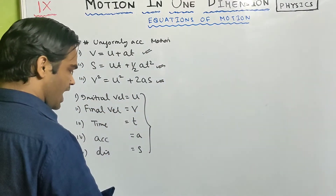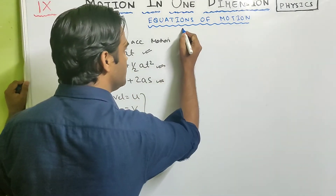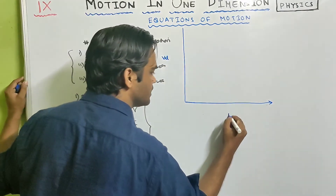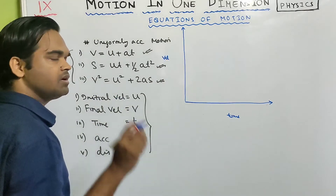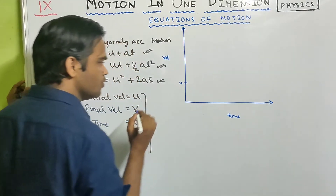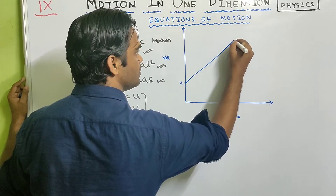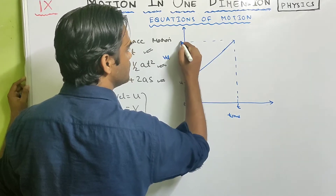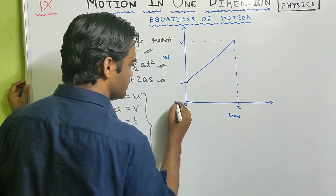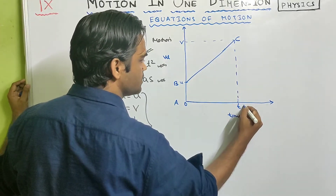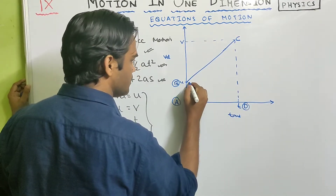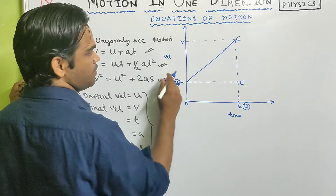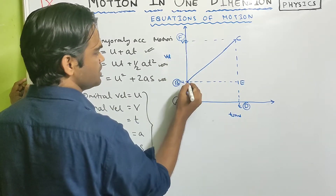Just look carefully. I will draw the velocity-time graph. The x-axis is time and the y-axis is velocity. For a uniformly accelerated body, suppose the initial velocity was u, and after time t the velocity becomes v. I will name the points: A, B, C, D, and E, where this point is F.